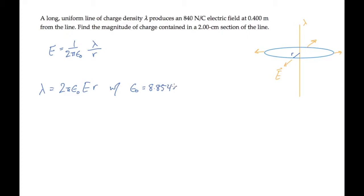We know the value of epsilon naught, and we're told the magnitude of the electric field and the distance r from the line. When we substitute these numbers and calculate, we find that lambda, the charge per unit length, is 1.87 times 10 to the minus eighth coulombs per meter.